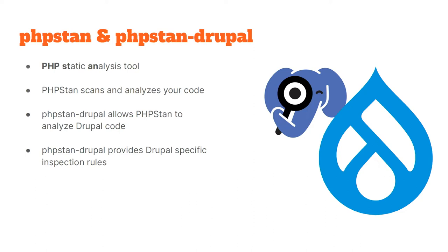PHPStan Drupal also provides some very Drupal-specific extensions. For example, if you do a lot of entity queries, before Drupal 10 you were automatically into entity access, but in Drupal 10 you must explicitly opt in or opt out of entity access — that's a policy change, not a deprecation. There's a rule in PHPStan Drupal that works for about two-thirds of the code we can read, saying: 'hey, you have an entity query that does not specify entity access checks.' So these are things that aren't quite deprecations but have specific rules to help PHPStan understand how to read the code.